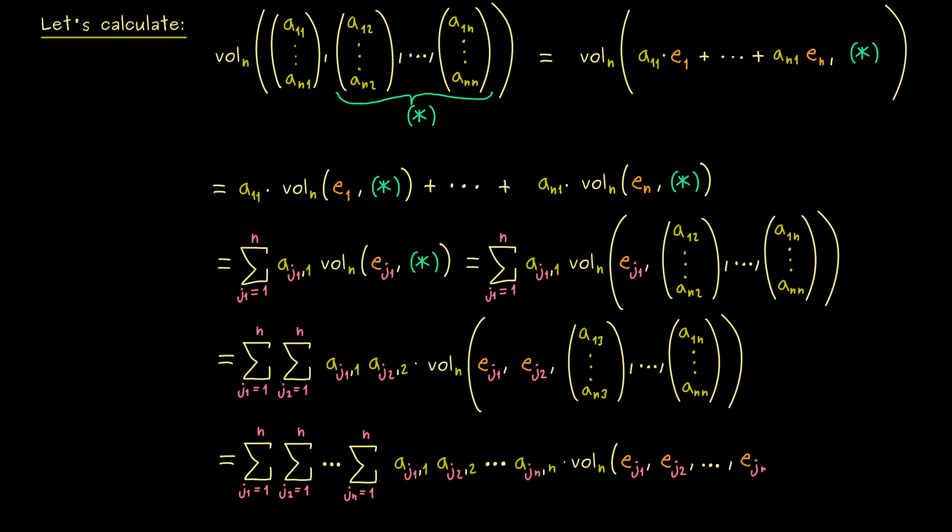The only thing we see here, for each entry we have a different index. And there we have it. This is our formula. If we assume linearity, the volume form necessarily has to look like this.